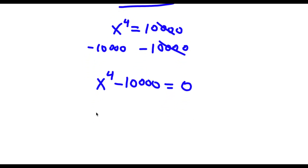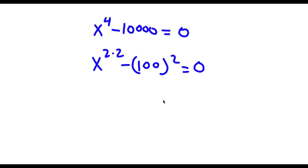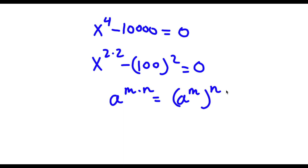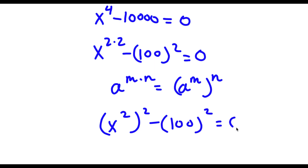Now x to the power of 4 I can rewrite as x to the power of 2 times 2, because 4 is equal to 2 times 2. And 10,000 I can rewrite as 100 squared, equal to zero. Now if I have something in the form a to the power of m times n, this is equal to a to the power of m to the power of n. So x to the power of 2 times 2 can be written as x to the power of 2 to the power of 2. So I have this minus 100 squared is equal to zero.